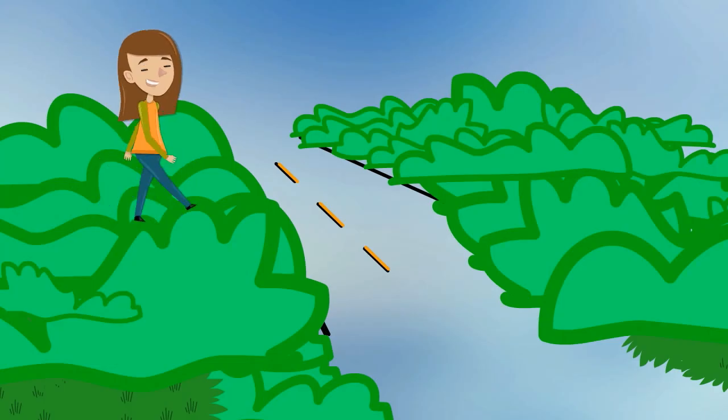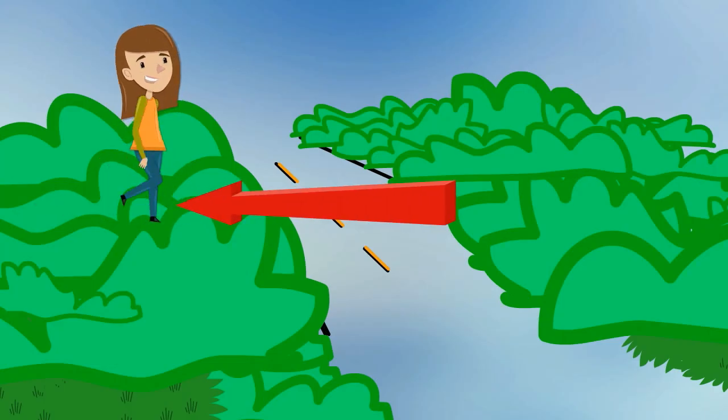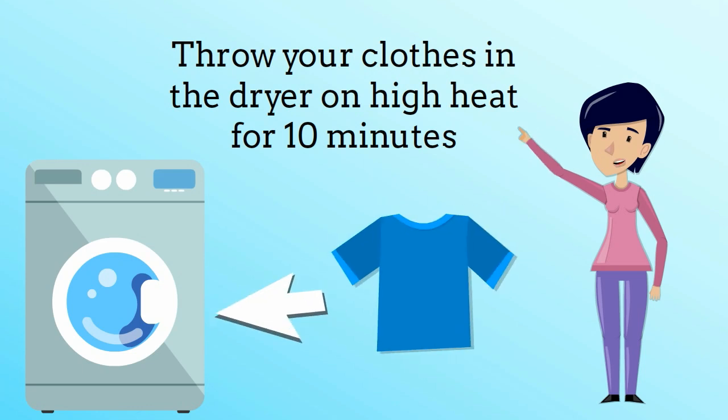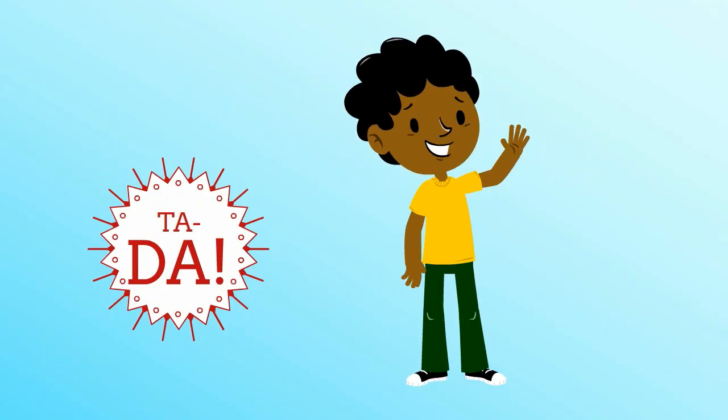If you're hiking or walking through grass, tuck your pants into your socks so they can't bite you. Then once you're home, throw your clothes in the dryer on high heat for 10 minutes and ta-da! You're tick free.